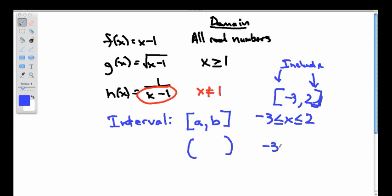Now if I meant to write the inequality x strictly bigger than negative 3 or strictly less than 2 and not including those endpoints, I would use parentheses, rounded parentheses. So the rounded parentheses means do not include the endpoints. The square ones mean do include the endpoints.